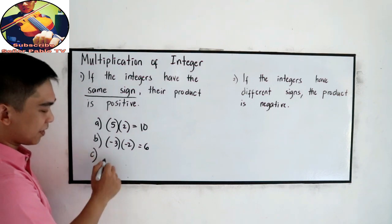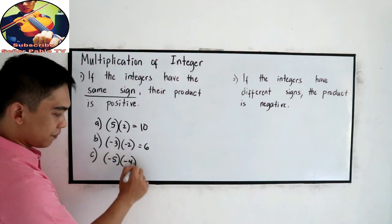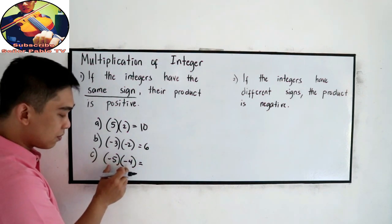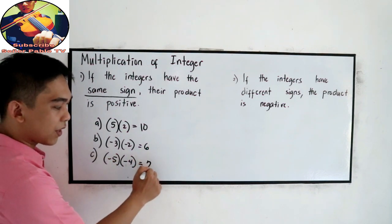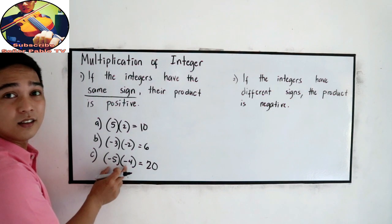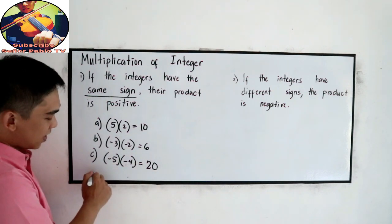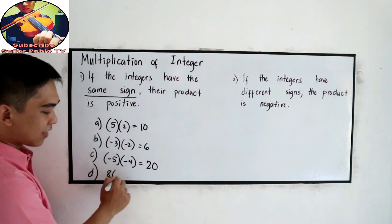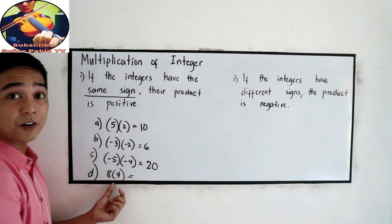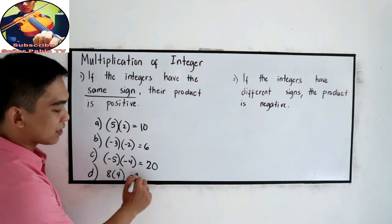Letter C: negative 5 times negative 4 — both are negative, so 5 times 4 is 20. Since they have the same sign, the answer is positive 20. Letter D: 8 times 4 — that's 32. So, positive 32. Remember: if they have the same sign, the product is positive.